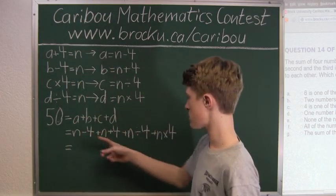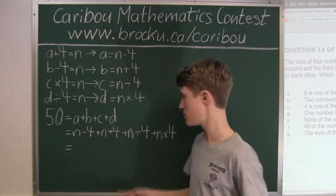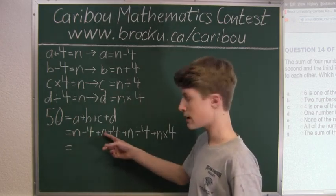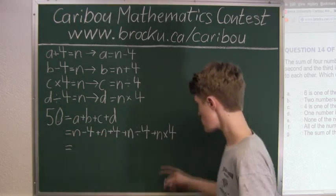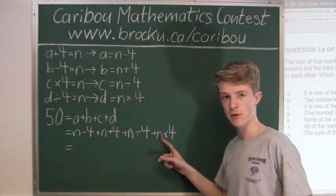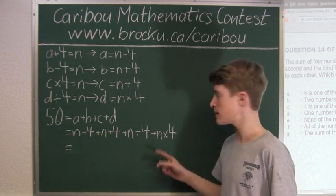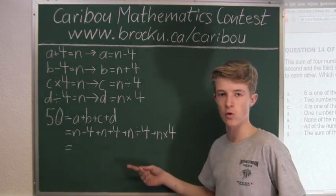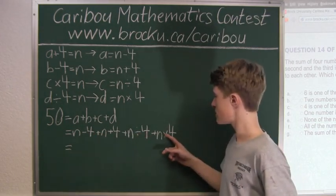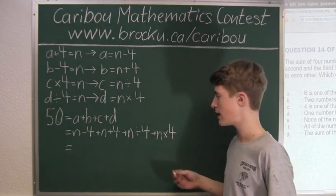We know that minus four and plus four cancel out to zero. Then we have N plus N is two N. Then here we have N times four is four N. So two N plus four N is six N. And then we have N divided by four, so we have one quarter of N. So we have six point twenty-five N.